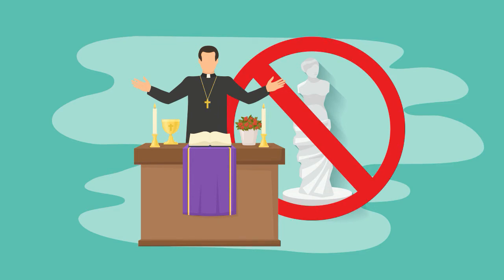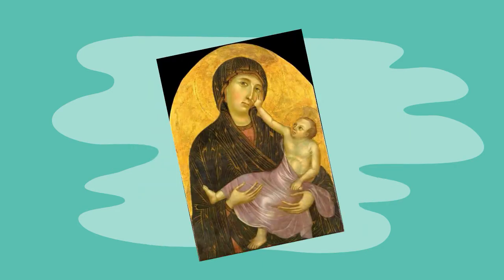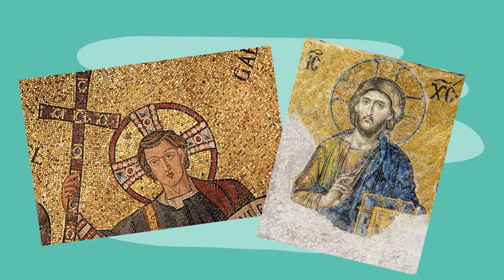No statues were allowed and they had formulas for how to depict baby Jesus and Maria. So, we get a lot of baby Jesuses with six packs and a lot of people pointing to the sky.